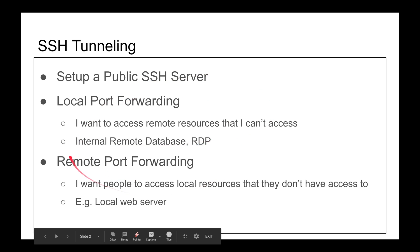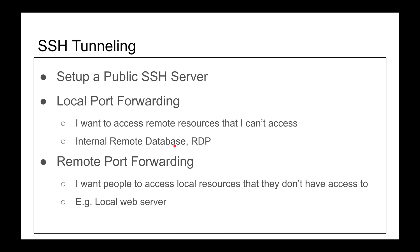Remote port forwarding is more challenging to understand and a little bit confusing. Remote port forwarding is if you want other people to have access to your local resources — it's the opposite direction. Let's say you have a web server on your machine and you want to send a URL for someone to test your application. You still use the public SSH server as a centralized location and ask that public server to listen on a port, and any traffic going to that port gets forwarded to you.